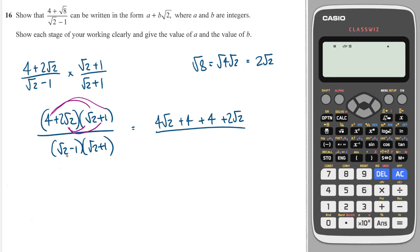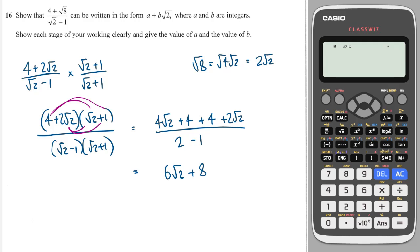On the bottom, we're going to get root 2 times root 2, which is 2. We're going to get a root 2 and a minus root 2, which will cancel. And then minus 1 times 1 is minus 1. So simplifying the top, we're going to get 6 root 2 plus 8, and that's all over 1. So that is just 6 root 2 plus 8, and we're done.